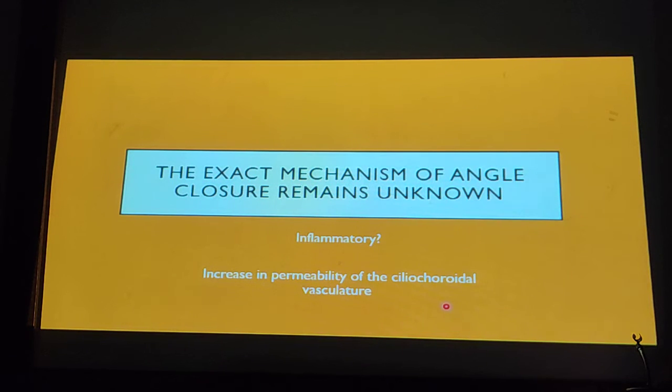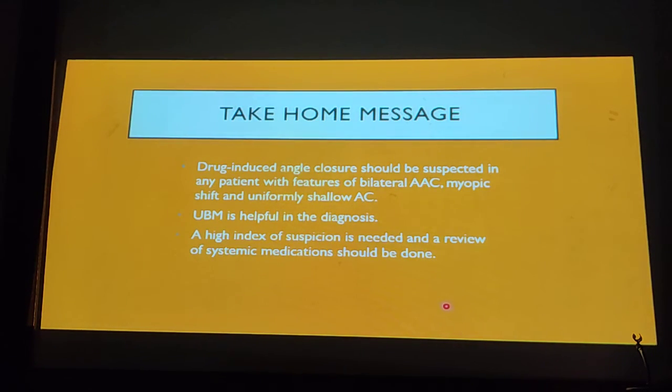The exact mechanism of angle closure remains unknown. However, as we said, it's probably an inflammatory process that causes the choroidal effusion and thus anterior rotation of the ciliary body. So the take-home message here is that drug-induced angle closure should be suspected in any patient with features of bilateral acute angle closure, myopic shifts, and uniformly shallow AC without iris bombe. UBM can be helpful in diagnosis. And a high index of suspicion is needed in these patients with a review of systemic treatment, which we sometimes tend to overlook. Thank you very much.